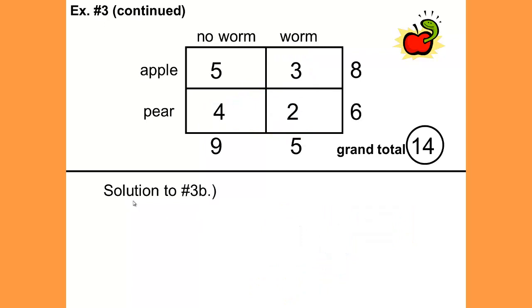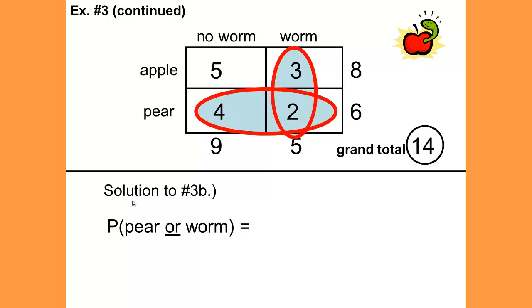Let's look at 3B. For the pear or worm, again, let's shade what we want in our table: the pears, the worms. Since we're looking for the OR, we want to shade the union. We want to shade all of the groups. We would add 4 plus 2 plus 3 which would be equal to 9 over 14 or .6429.